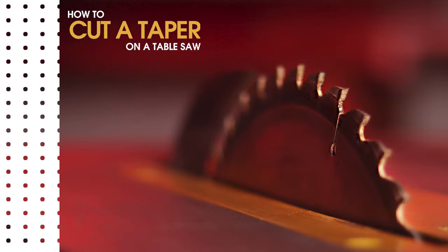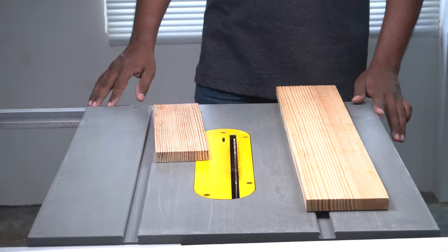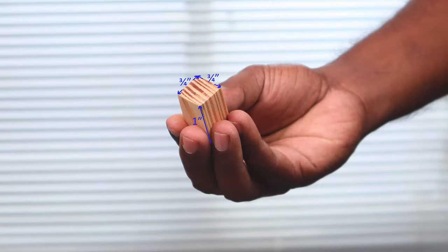In this video I'll show you an easy way to cut a taper using a table saw. Begin by placing the wood to be taper cut on your work surface. Measure and mark the desired taper thickness onto this wood.